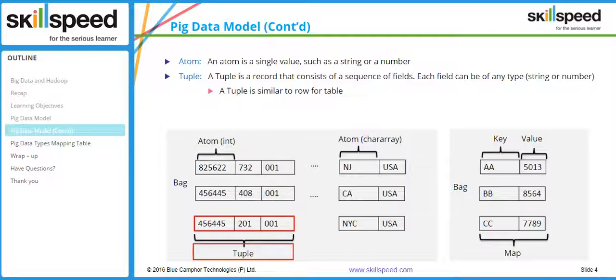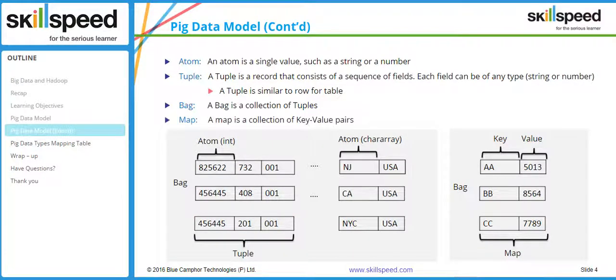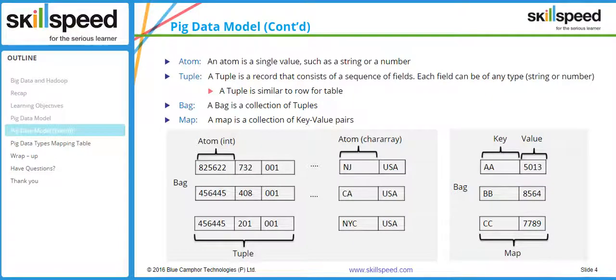A bag is a collection of tuples, and a map is a collection of key-value pairs. Technically speaking, a bag is a combination of multiple tuples, and a key-value pair is called a map.